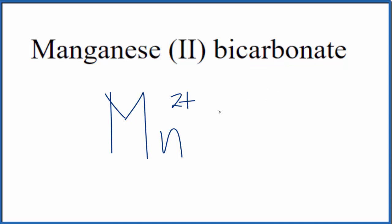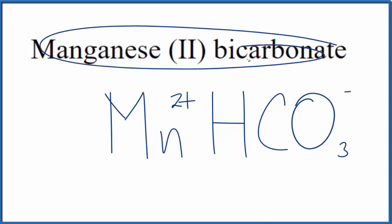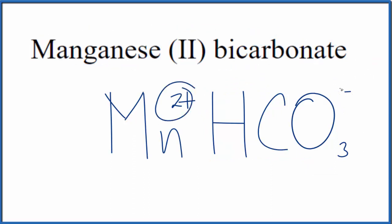So we have our bicarbonate ion, HCO3 minus, and the negative charge goes to the whole bicarbonate ion. Because this is neutral, we don't have the word ion after it. The charges here, the 2 plus and the 1 minus, need to add up to 0.